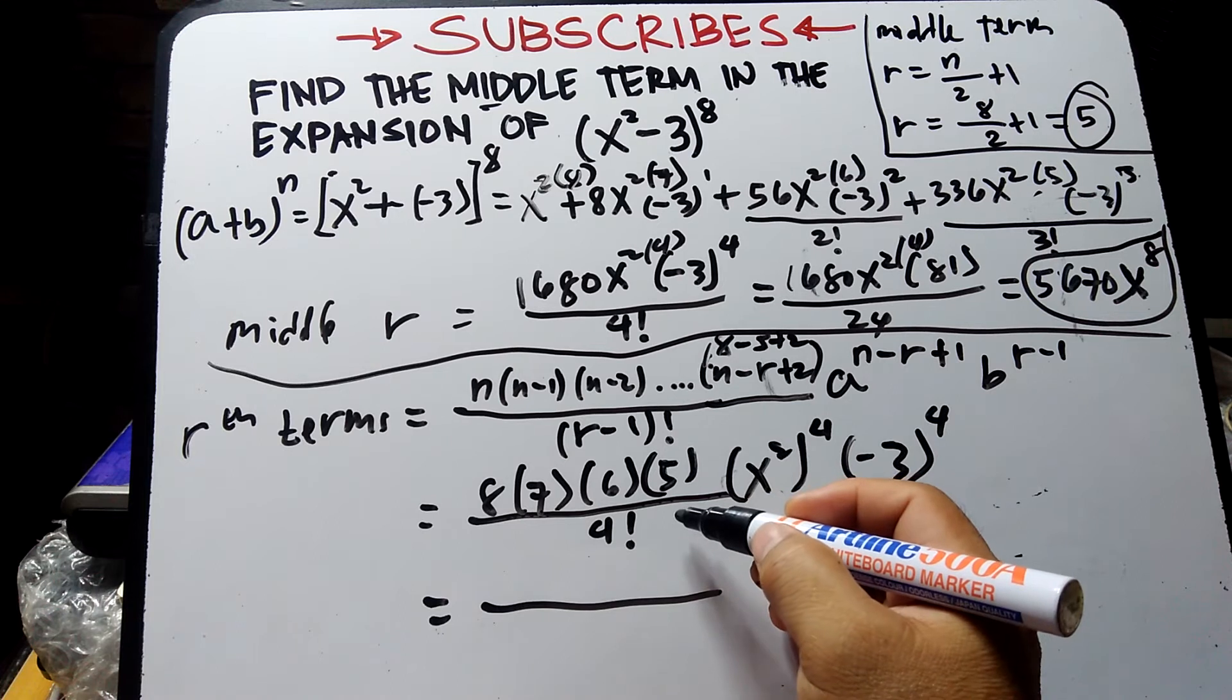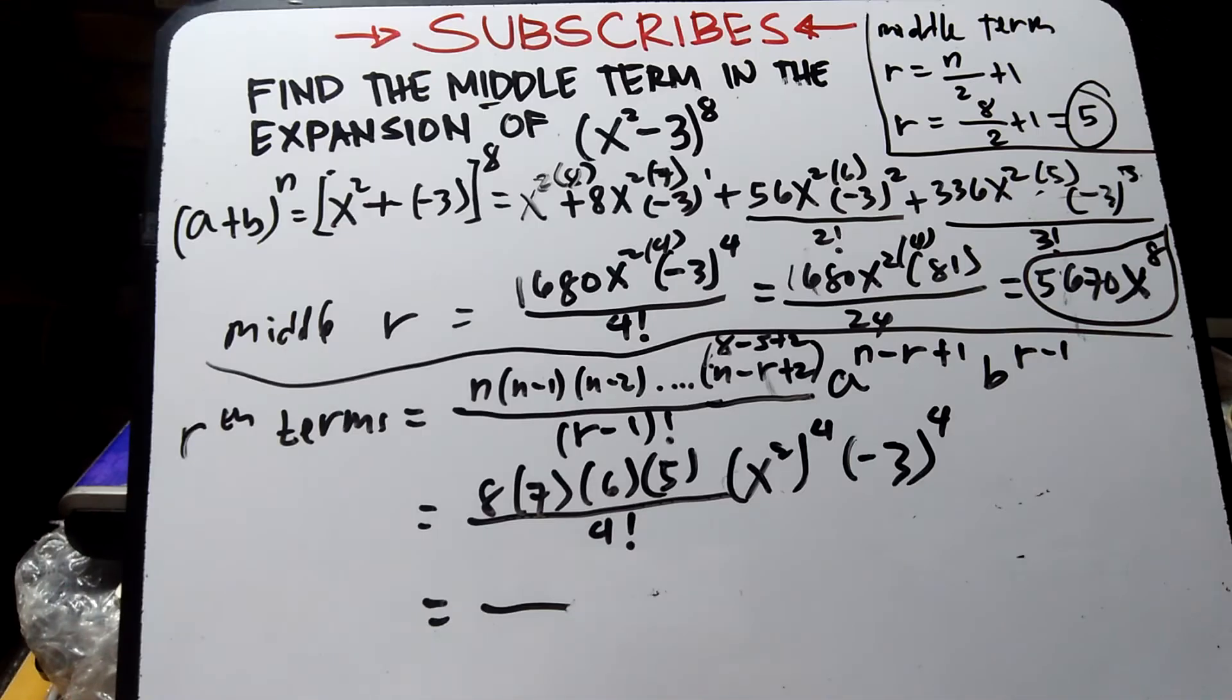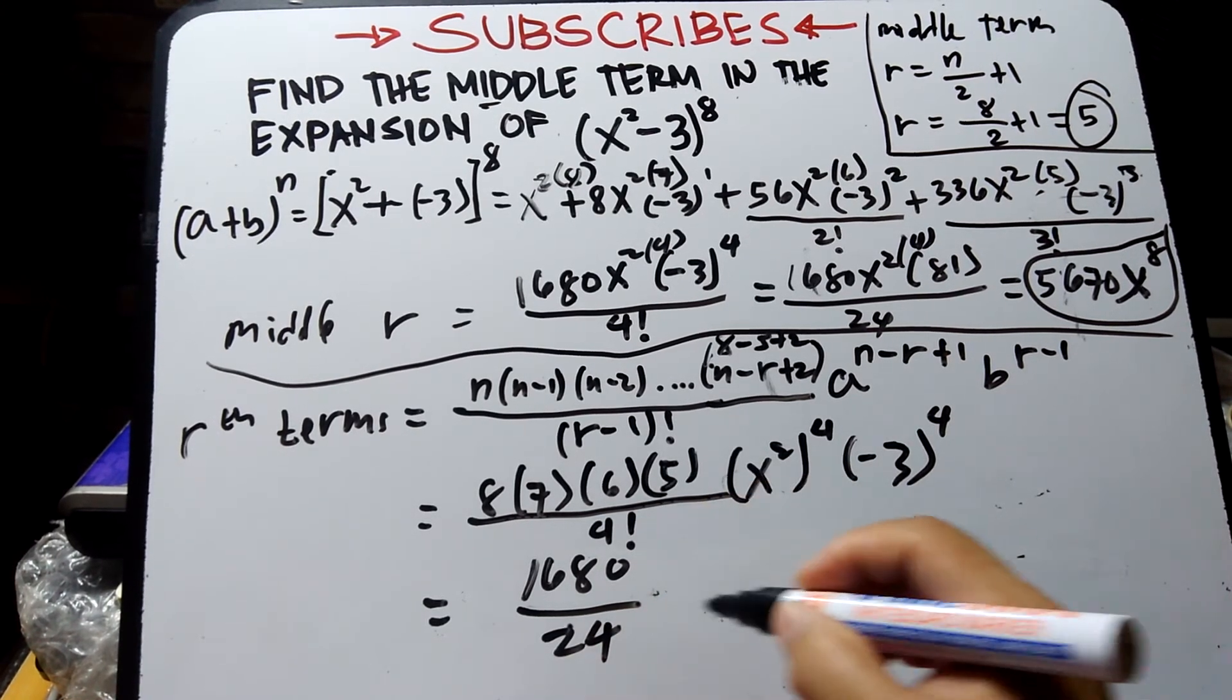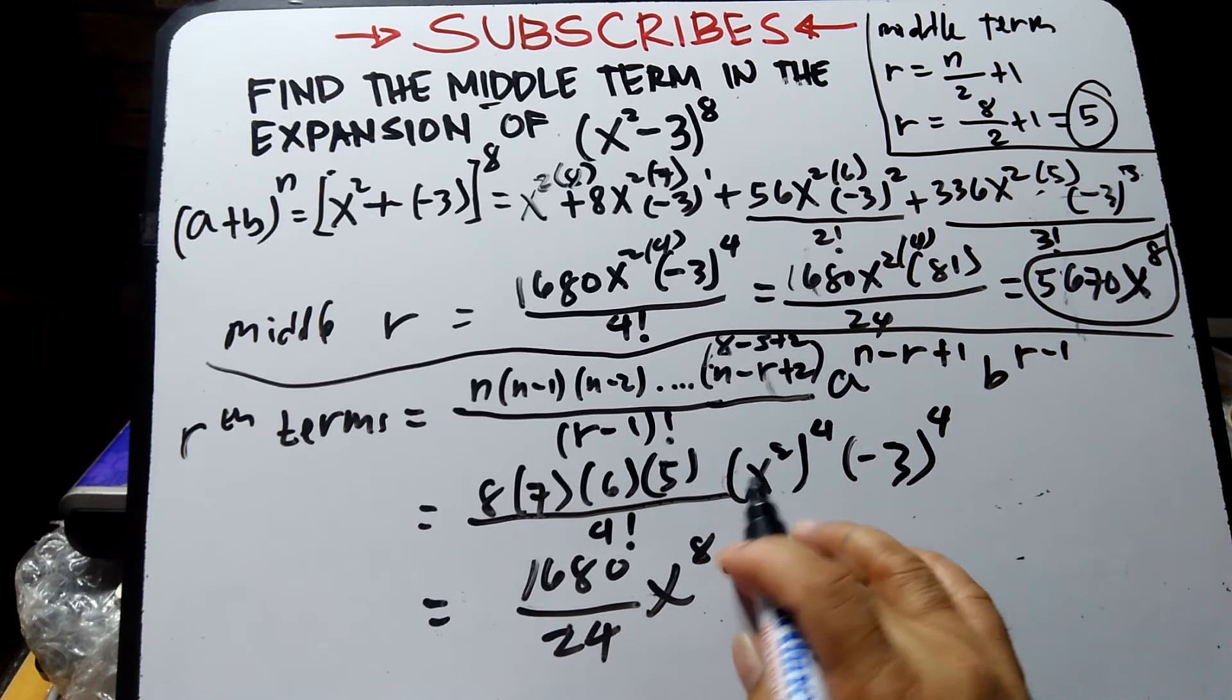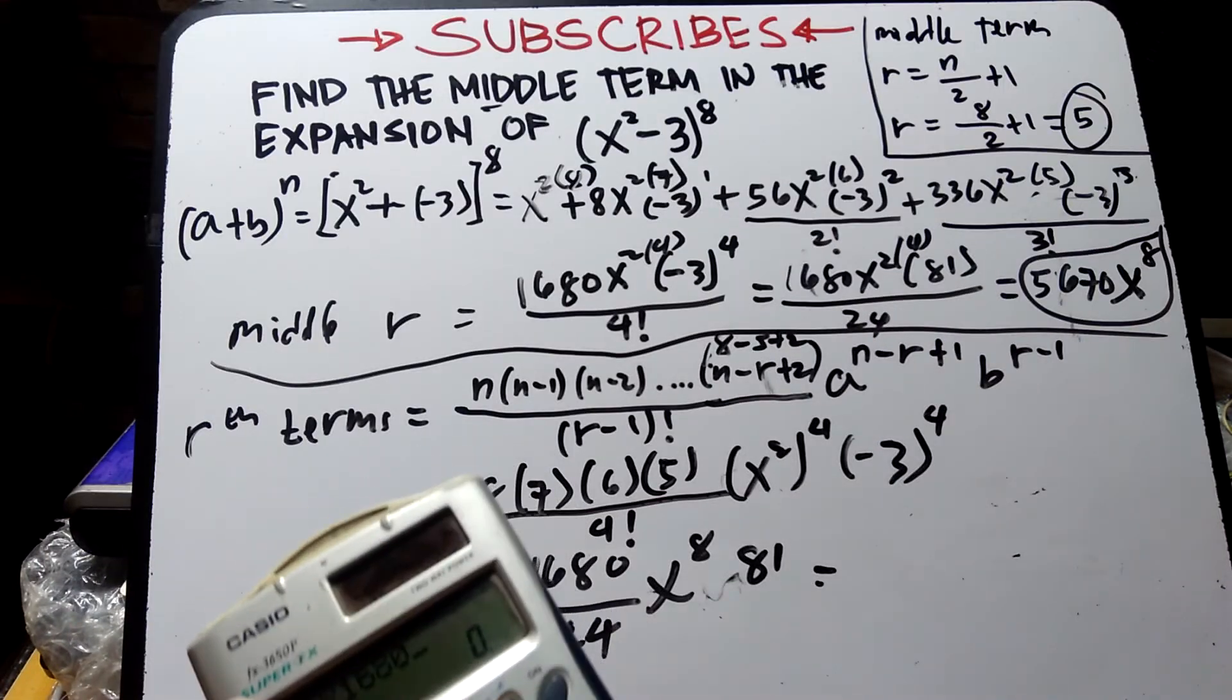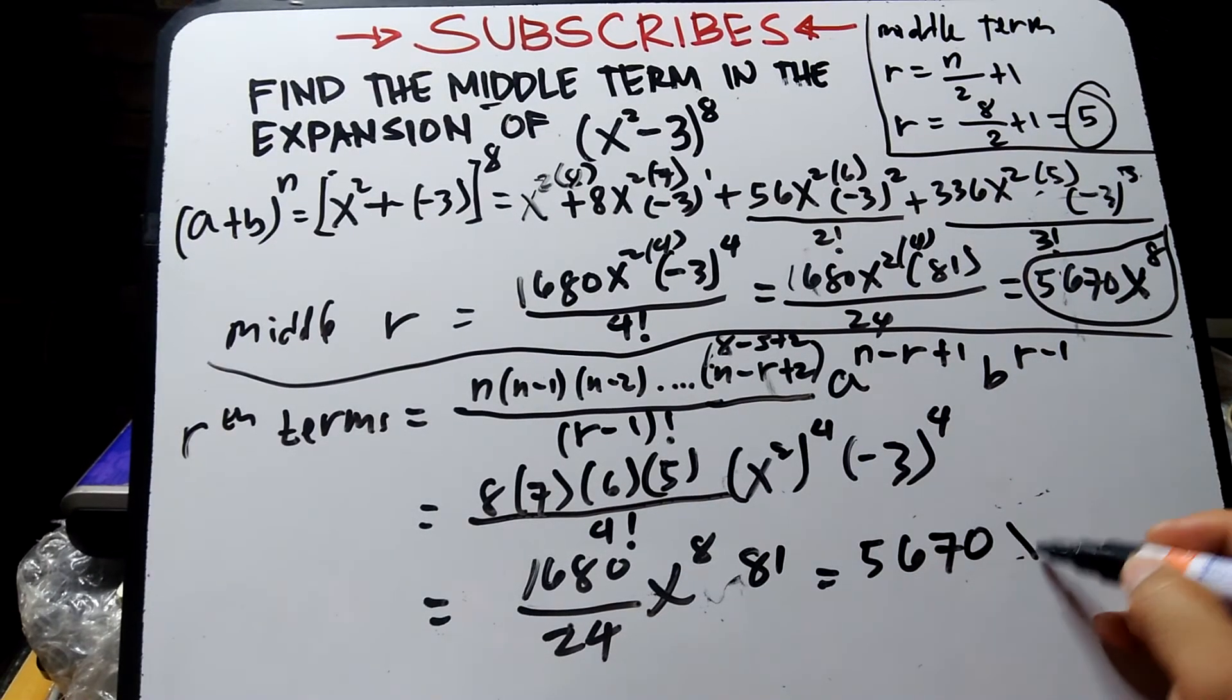8 times 7 times 6 times 5, using calculator: 8 times 7 equals 56, times 6 times 5 equals 1680 over 4 factorial which is 24. Then (x²)⁴ becomes x⁸, 81 becomes positive. Multiply 81 times 1680 divided by 24 equals 5670x⁸.